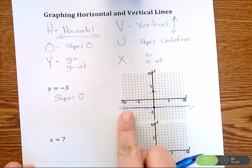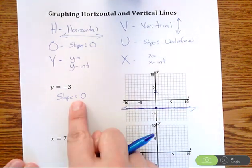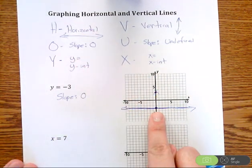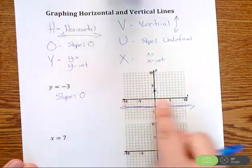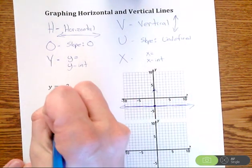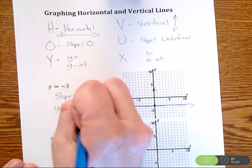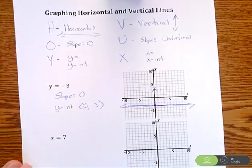And some things we know about this is from watching slope dude, the slope is zero, but we also do that from Hoi. Notice there is no x-intercept here. We never cross the x-axis, but we do cross the y-axis. So there is a y-intercept at zero negative three.